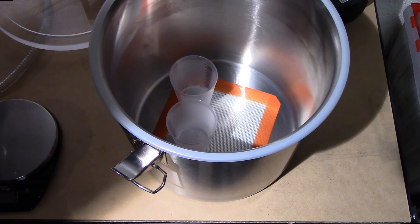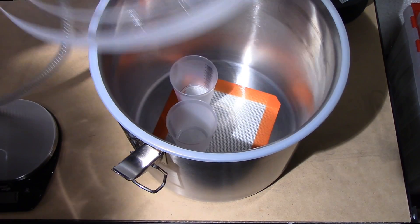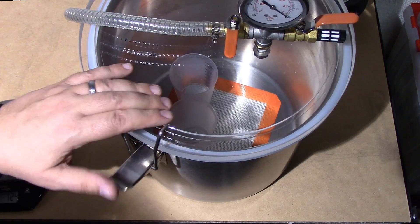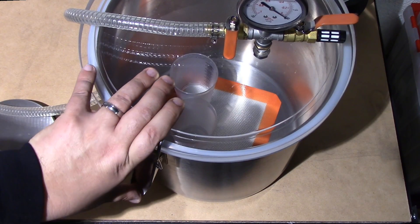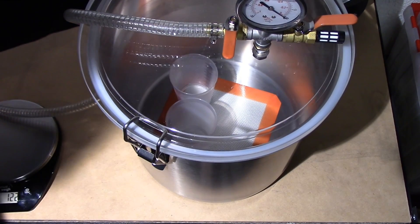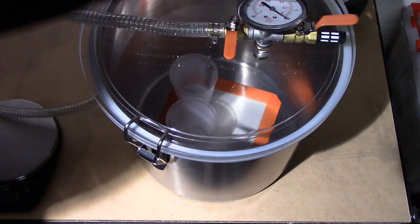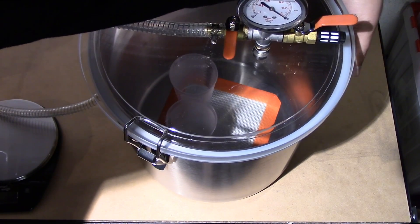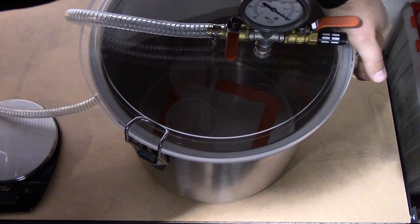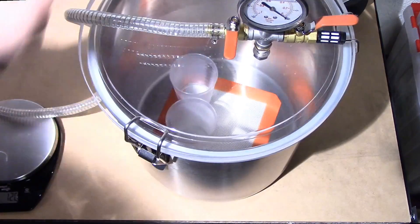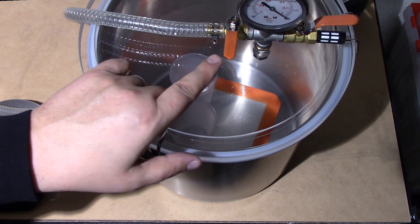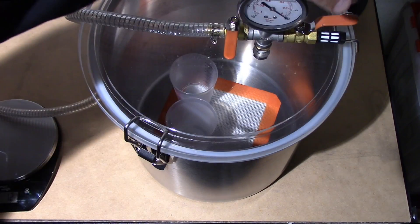And then what I'm going to do is place the top on the vacuum chamber and then clamp it down. Okay, so I'm going to now lower the camera and monitor the pressure gauge as I start to pull a vacuum.